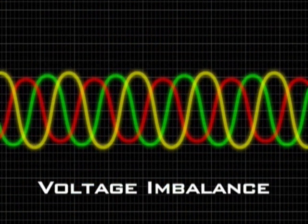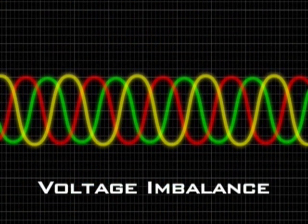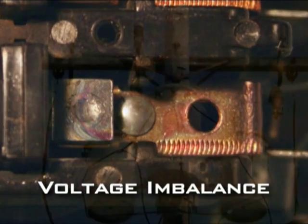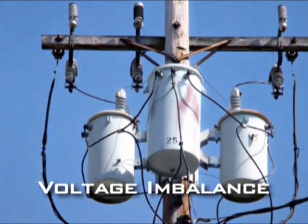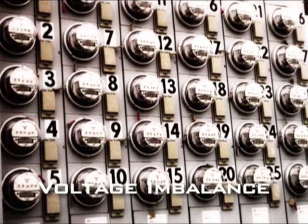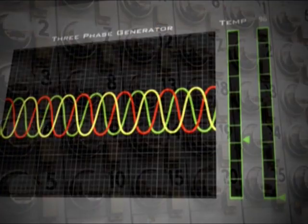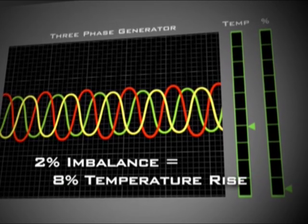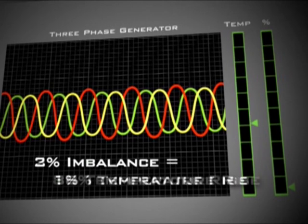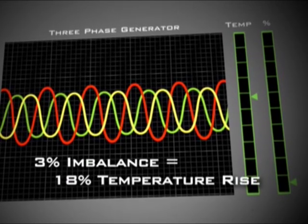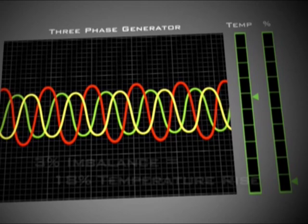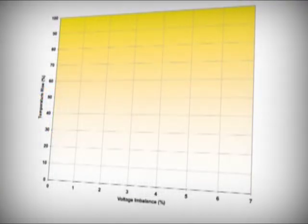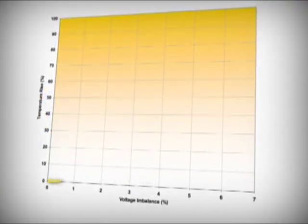The third and very common problem that threatens compressors is voltage imbalance between the three phases. There are several causes: a contactor becomes worn, a transformer fails and is replaced by a different current model, or a new load is added to one phase of the facility's power system. Even small voltage imbalances can be harmful. A two percent imbalance can cause the temperature of the motor windings to increase eight percent. A three percent imbalance can cause an eighteen percent temperature rise. The greater the imbalance, the higher the motor winding temperature and the sooner the insulation will fail.